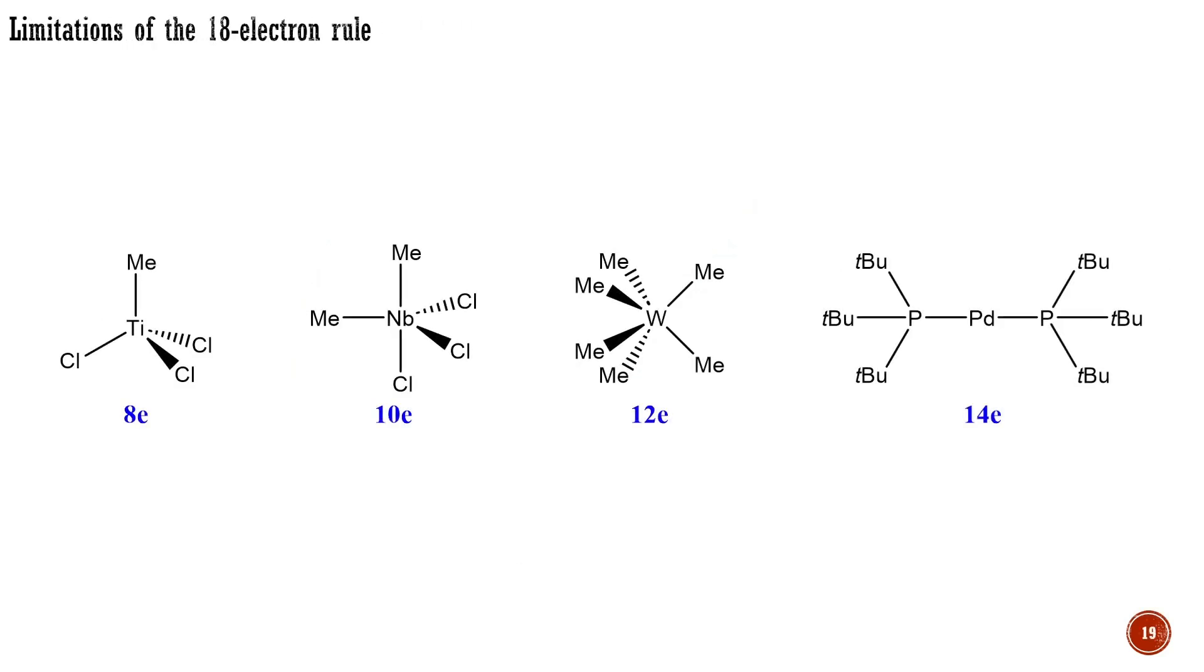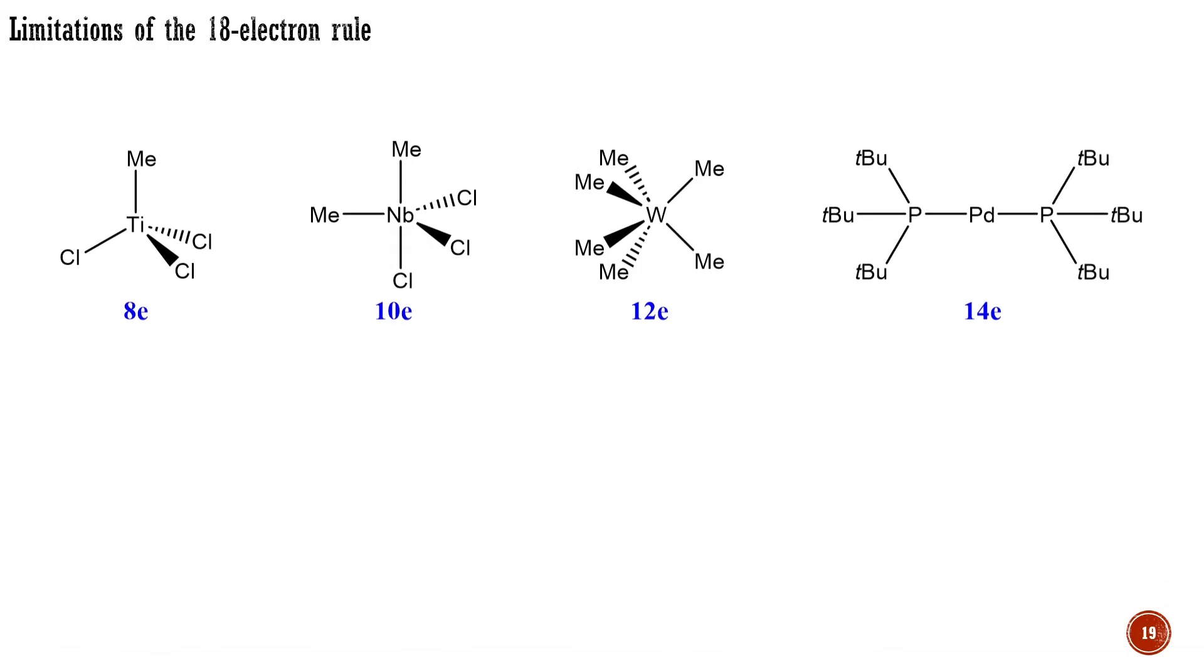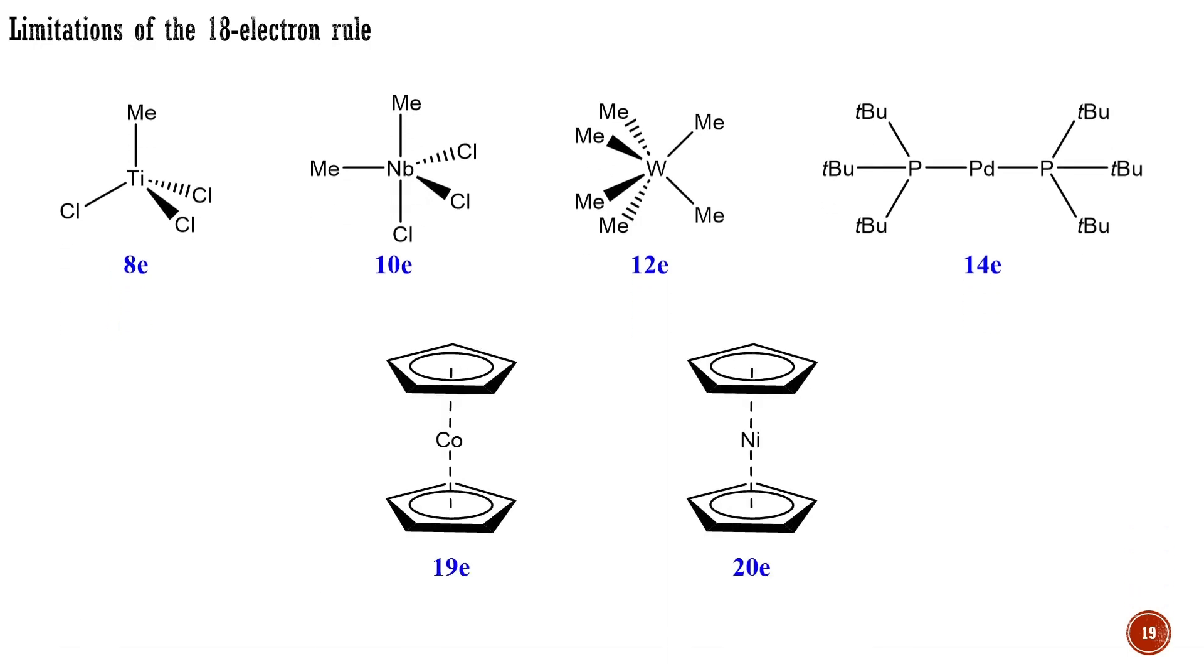Some isolable complexes have an electron count other than 18. Most non-18-electron structures have less than 18 electrons. Representative examples are methyl-titanium trichloride with 8 electrons, dimethyl-niobium trichloride with 10 electrons, hexamethyl-tungsten with 12 electrons, and bis(tri-tert-butylphosphine)-palladium(0) with 14 electrons. Much rarer are d-block complexes with more than 18 electrons. Examples include cobaltocene with 19 electrons and nickelocene with 20 electrons.